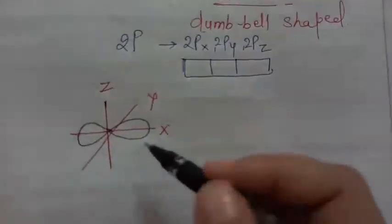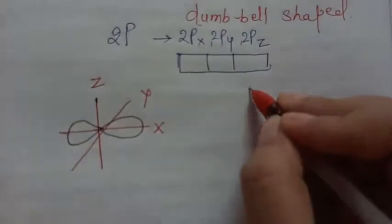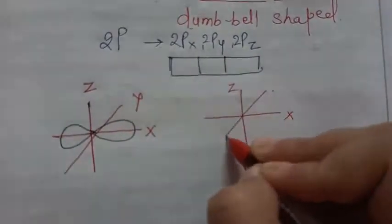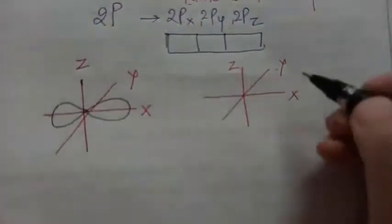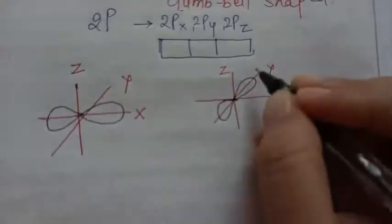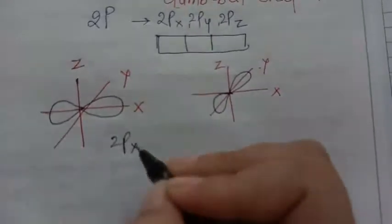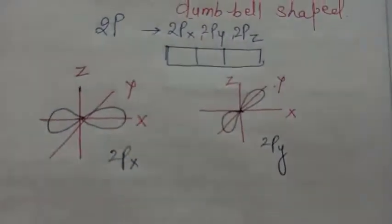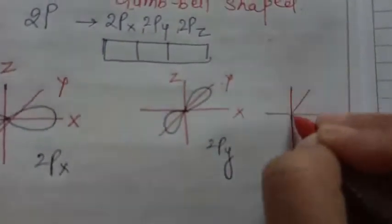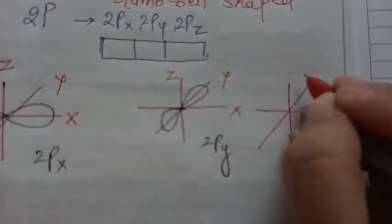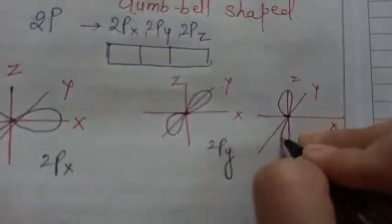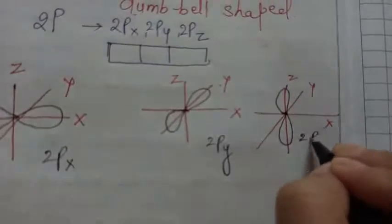Now if we have to draw 2py, then again all the three axes x, z and this is y. So 2py, the dumbbell will be drawn on the y axis. So this was your 2px, this is your 2py. Similarly if we are supposed to draw 2pz, again we will be drawing the three axes x, y and z, and now the dumbbell will be drawn on the z axis. So this is called as 2pz.